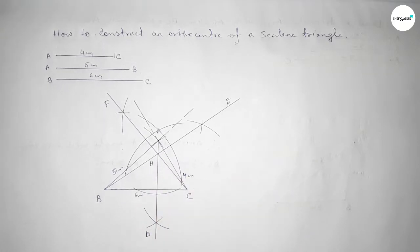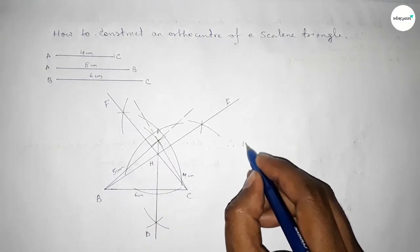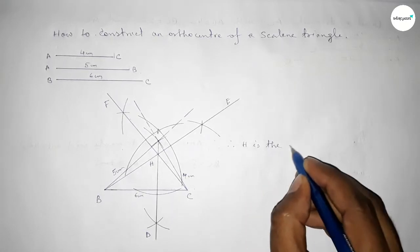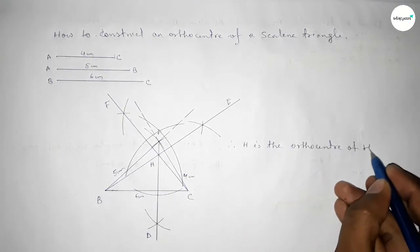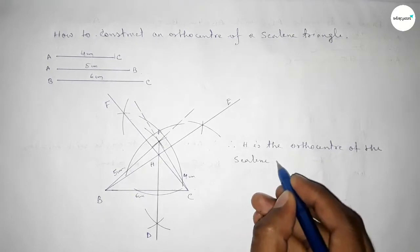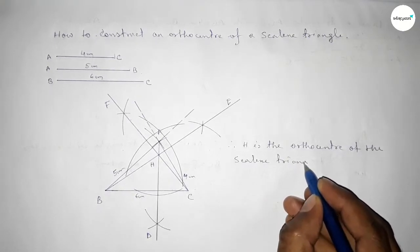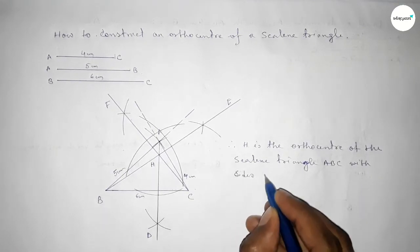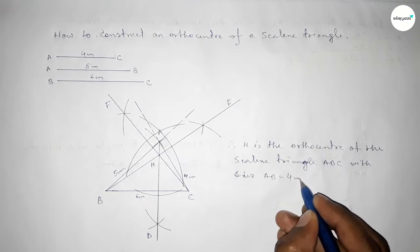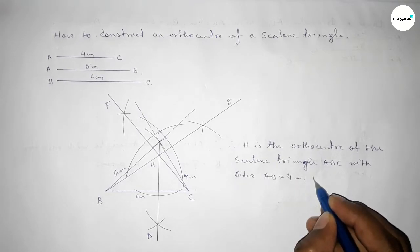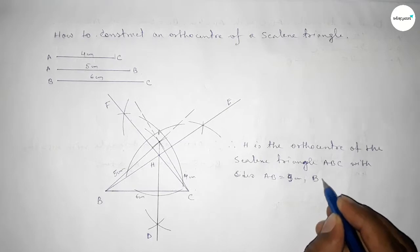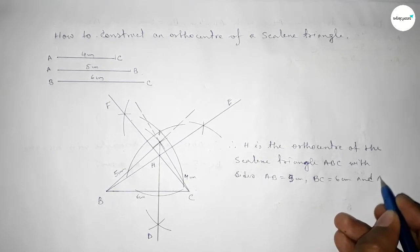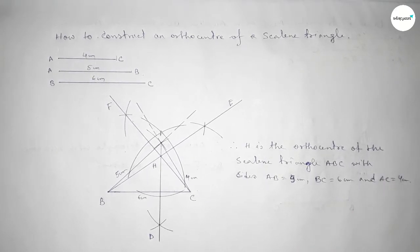The three perpendicular lines intersect at point H. Therefore H is the orthocenter of this scalene triangle ABC, with AB equal to five centimeters, BC equal to six centimeters, and AC equal to four centimeters. That's all — thanks for watching. If this video is helpful to you, please share it with your friends, and please like, comment, and share.